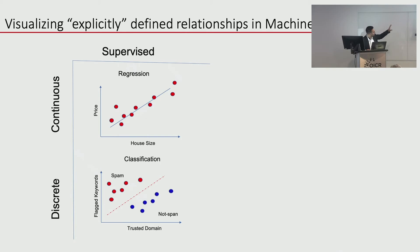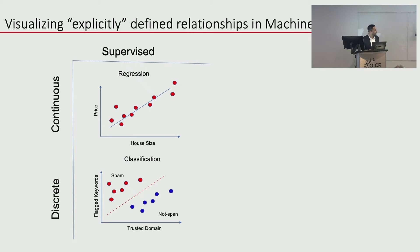Supervised learning has two forms: regression for continuous data — like correlating housing prices to house size — and classification for discrete data, like spam filtering, where features like trusted domain, Office 365 verification, or certain words like 'Viagra' are used to decide whether an email goes to your inbox or junk mail.